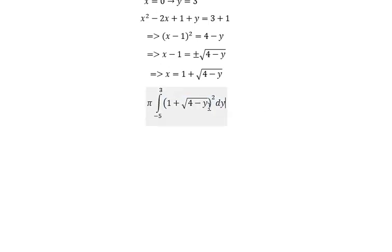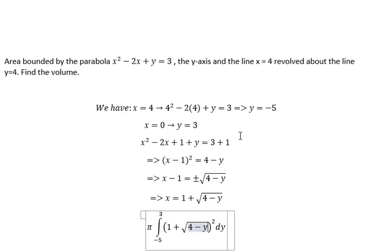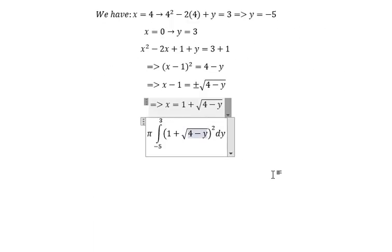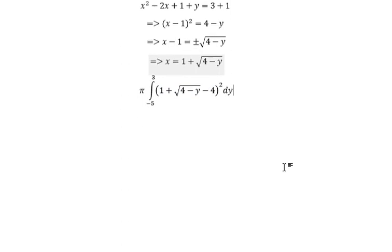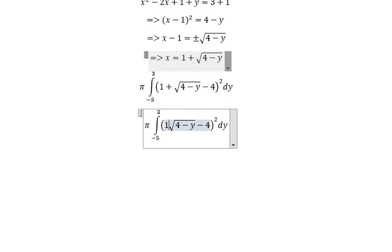Next, we need to choose this one minus number 4, because they revolve about the line y equals 4. 1 minus 4 is about negative 3. And now we can get the final answer.